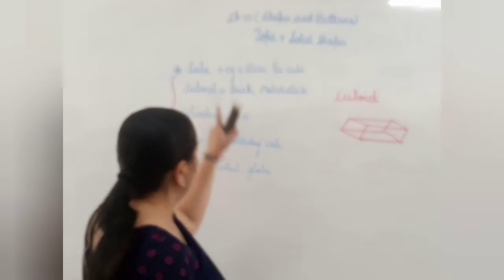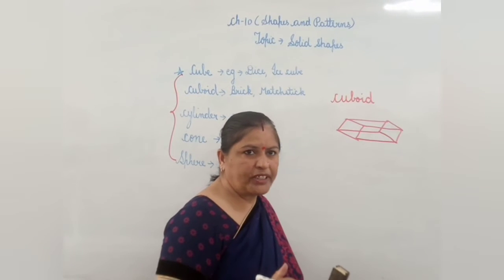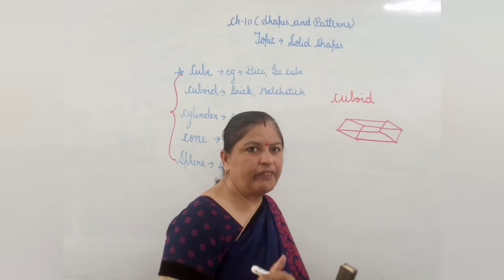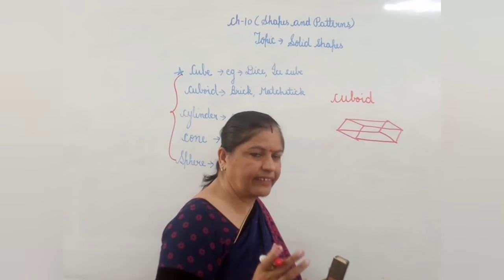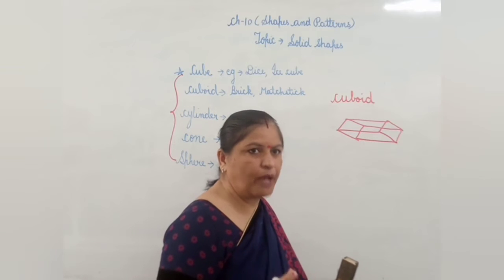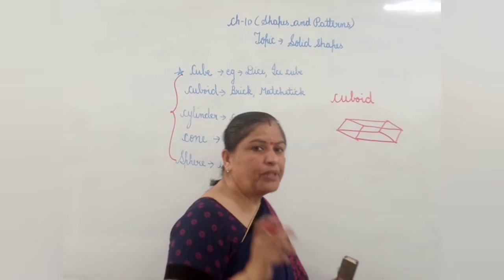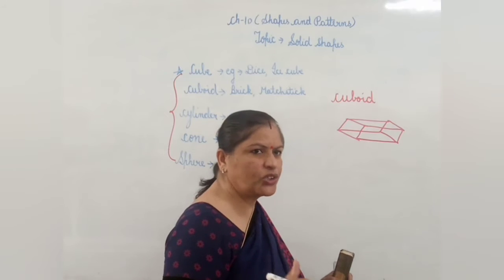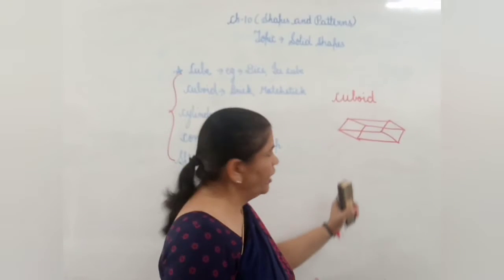Okay, what are the examples? Brick — in Hindi we call it 'eet'. That is called brick, and this is the example of cuboid. Another example is bat stick. Bat stick is also an example of cuboid.